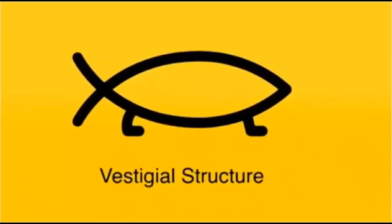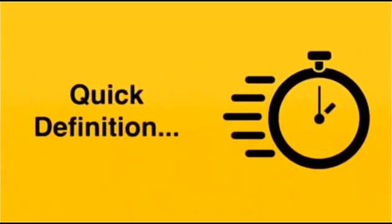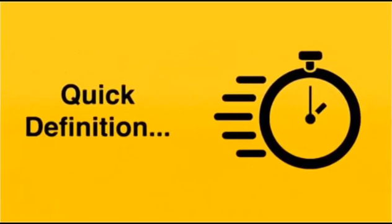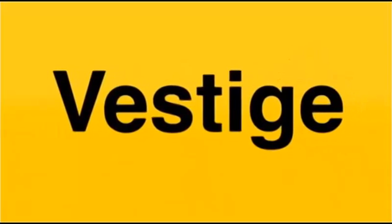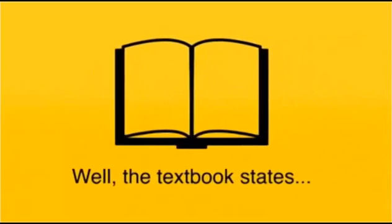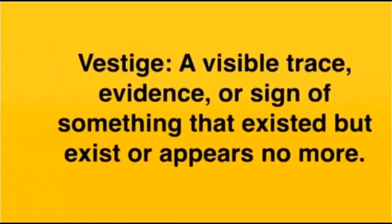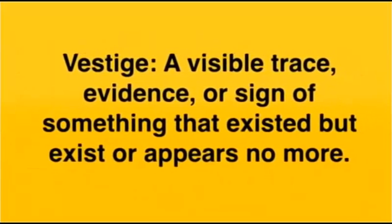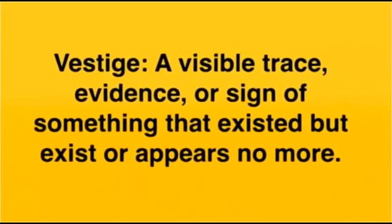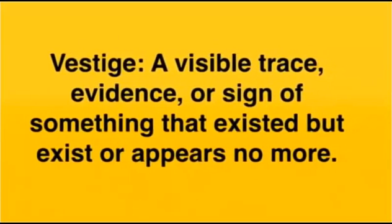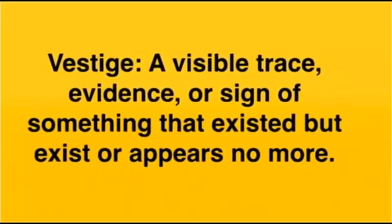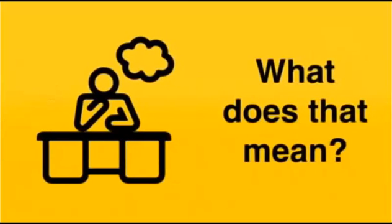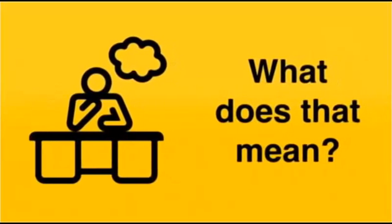Vestigial structures — a quick definition. Vestige: the textbook states, a visible trace, evidence, or sign of something that existed, but exists or appears no more. Now, what does that mean?